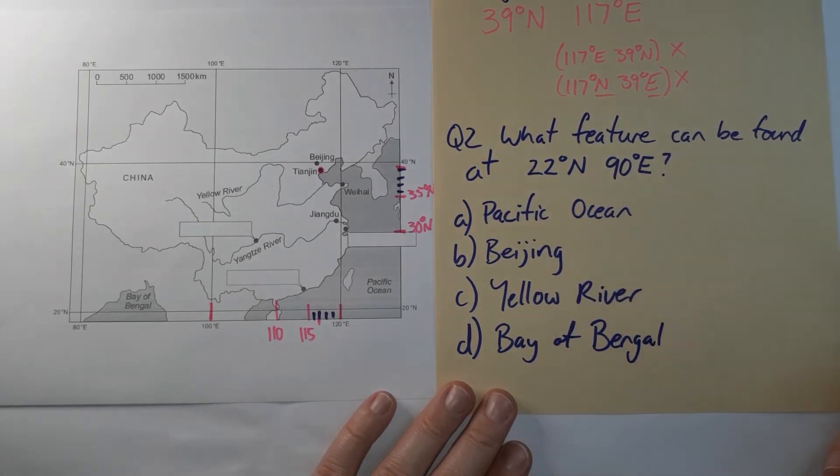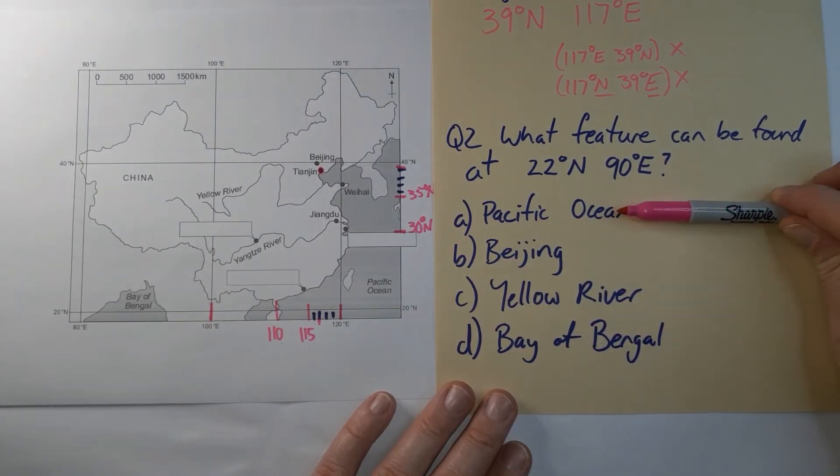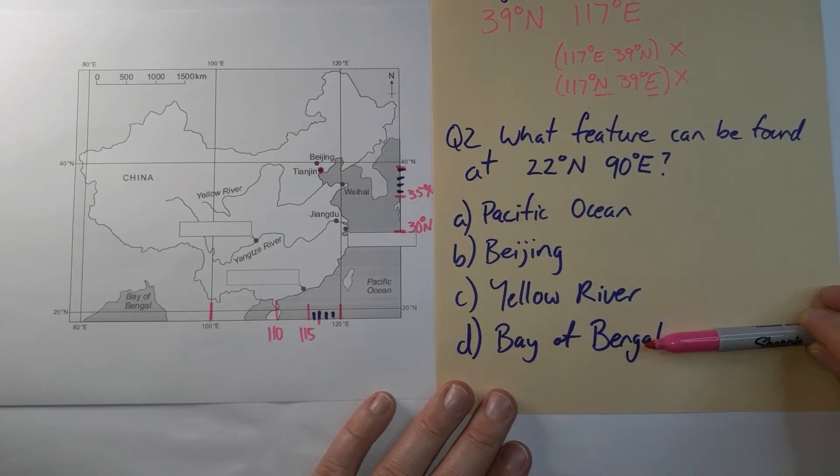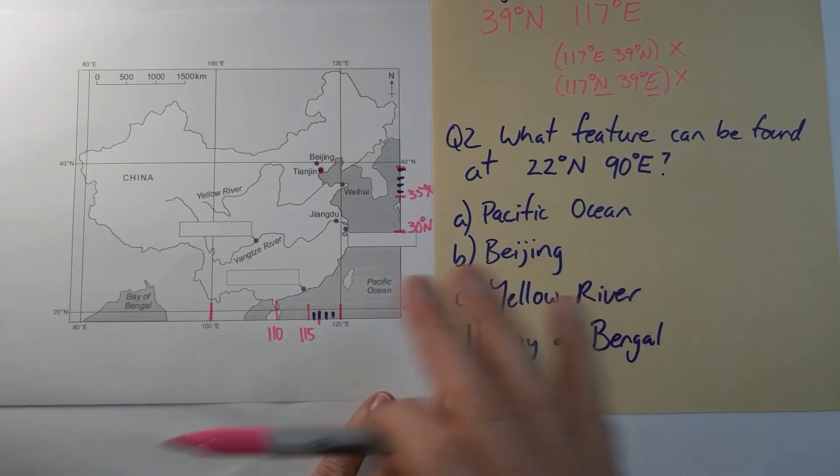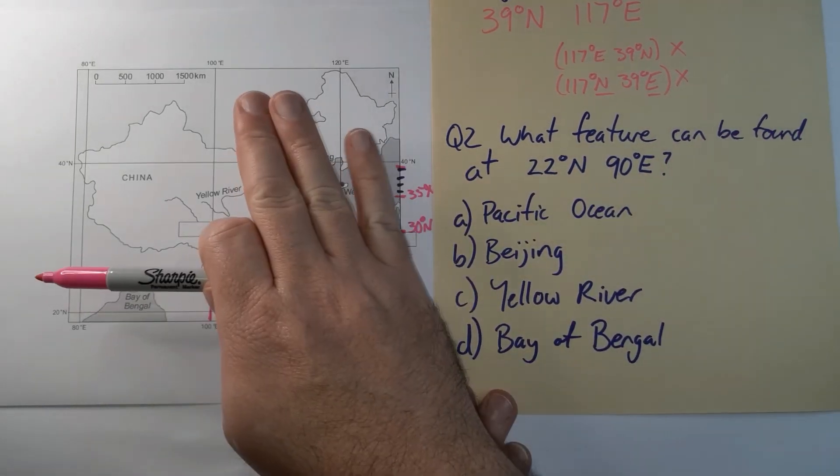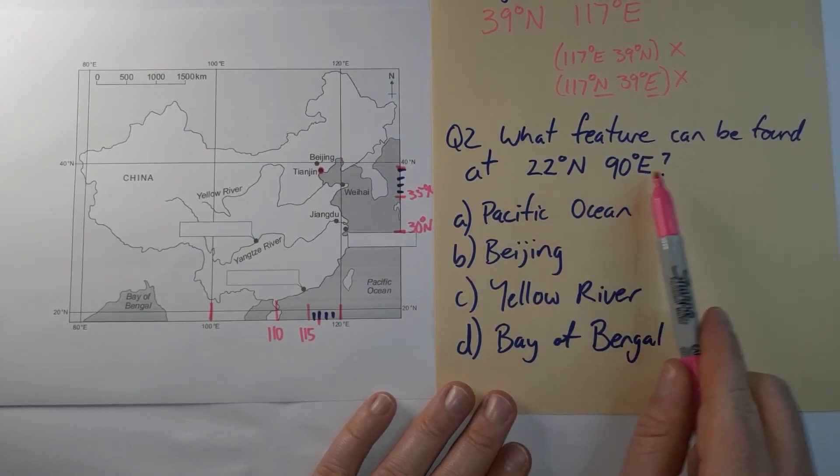If I said to you what natural feature can be found at this latitude and longitude, straight away I'd be able to cross out B, Beijing because Beijing is a city and it's not a natural feature. Or if it said what human made feature without looking at the map I'd be able to knock out the Pacific Ocean, the river and a bay is a body of water so that's a natural feature as well. So if that said what human feature can be found I wouldn't even have to look at the map but in this case it doesn't specify man-made or natural feature.